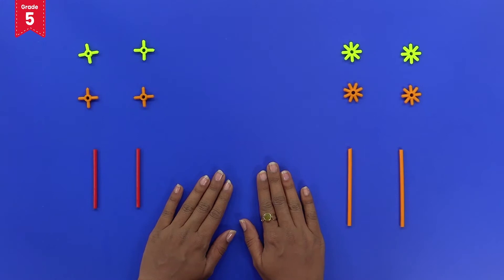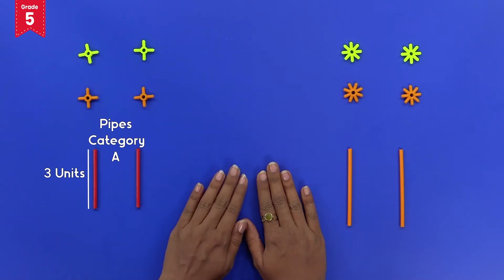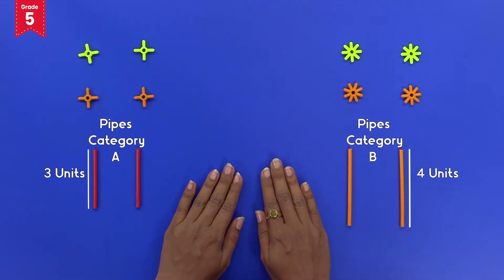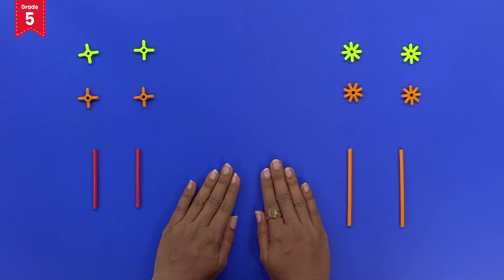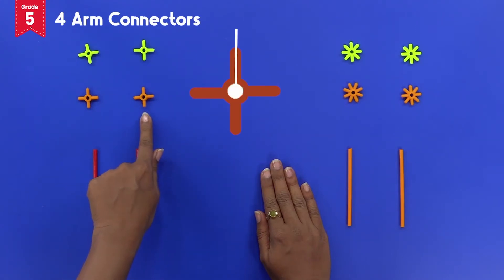To build a rectangular shape, we will take two pipes of category A whose length is 3 units and two pipes of category B whose length is 4 units. To connect these pipes we need four connectors such that a pair of their arms is aligned at 90 degrees. Here we have four-arm connectors where these two arms are aligned at 90 degrees.